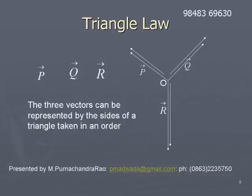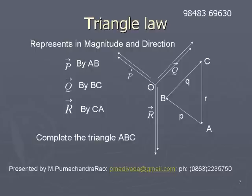So when three vectors acting at a point are such that their vector sum is zero, then they can be represented by the sides of a triangle taken in an order. After p, q is taken; after q, r is taken. That is how we take the vectors in a particular order.